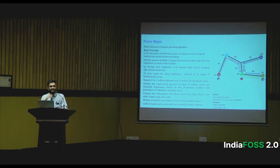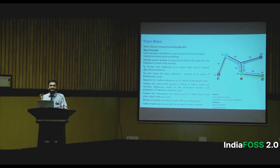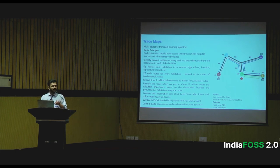In civil engineering, this is already done — it's called an origin-destination survey. We are trying to simulate that and do it quickly. There are multiple assumptions: people prefer to go to their nearest schools, hospitals, and markets. I'll cover those assumptions in the upcoming slides.